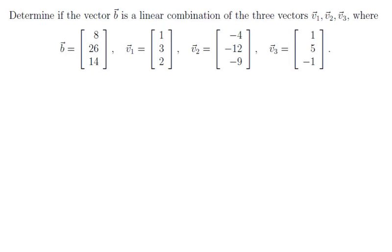Determine if the vector b is a linear combination of the three vectors v1, v2, and v3, where b is the vector [8, 26, 14], v1 is the vector [1, 3, 2], v2 the vector [-4, -12, -9], and v3 the vector [1, 5, -1].